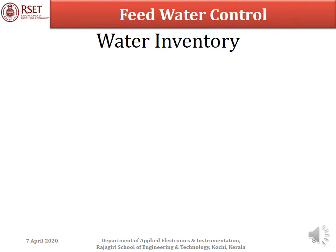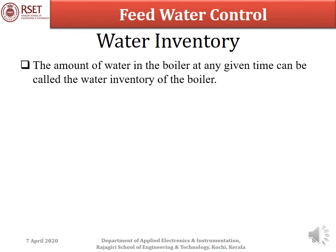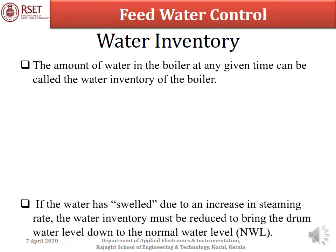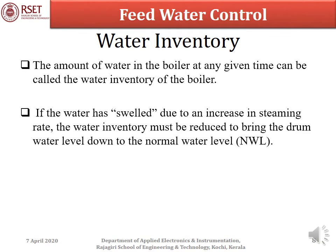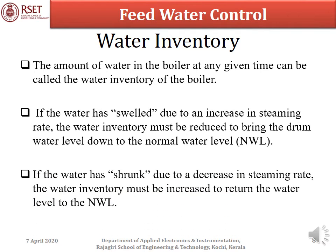The amount of water in the boiler at any given time is called the water inventory of the boiler. If the water has swelled due to an increase in steaming rate, the water inventory must be reduced to bring drum water level down to normal water level. If the water has shrunk due to a decrease in steaming rate, the water inventory must be increased to return the water level to NWL.